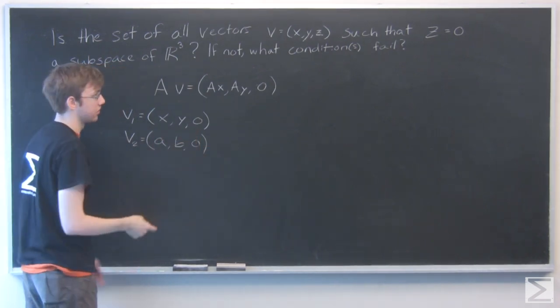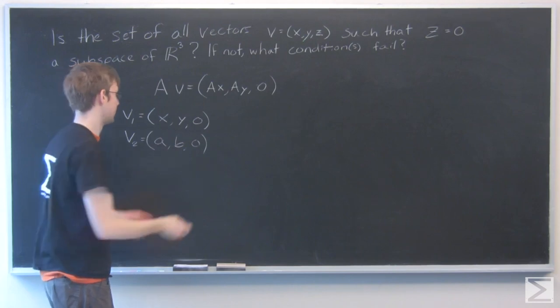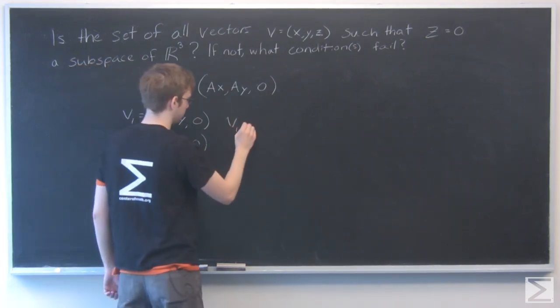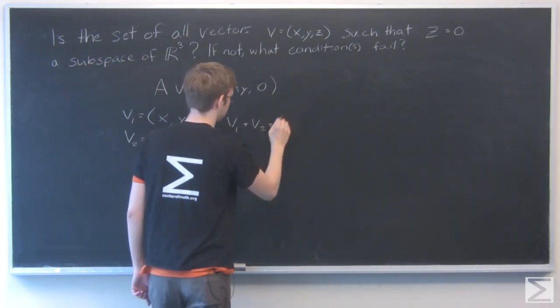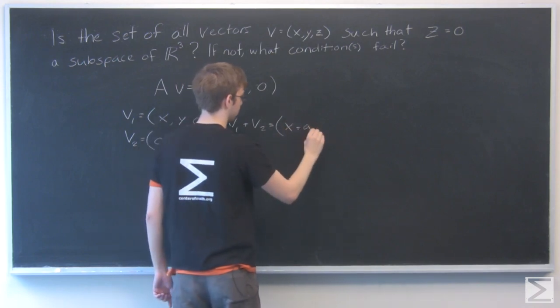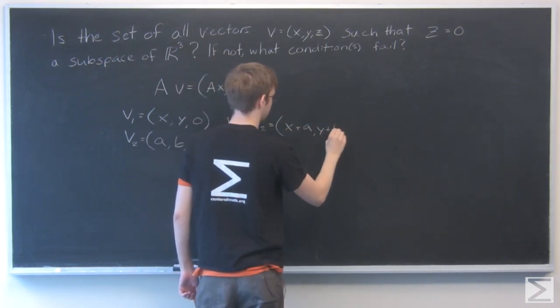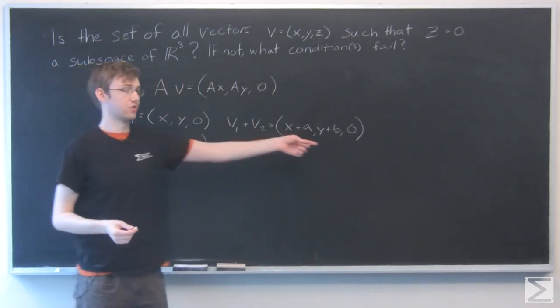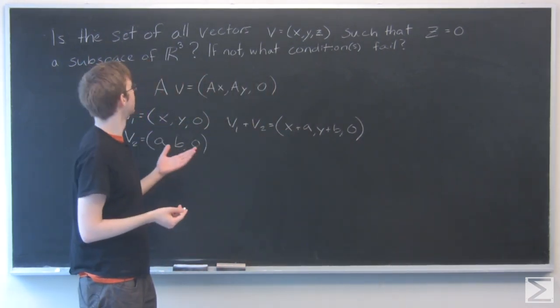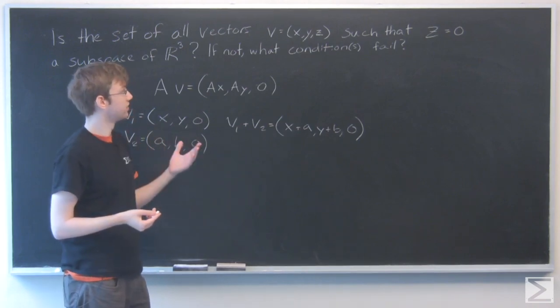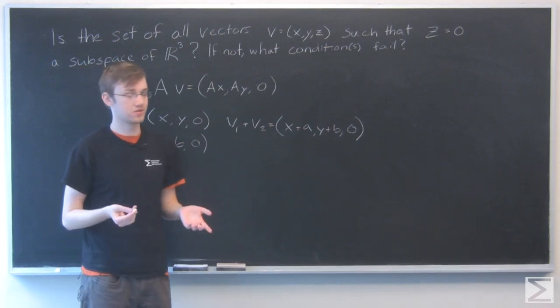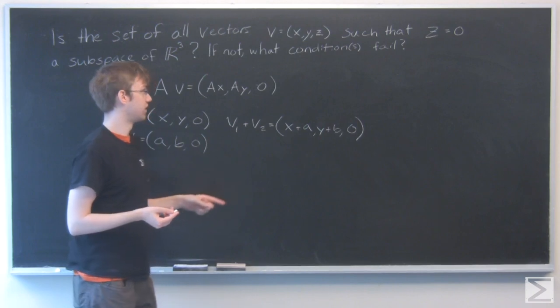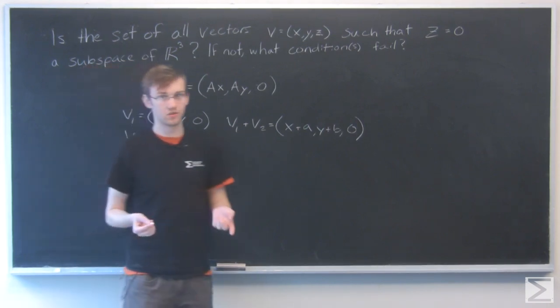Both of them have 0 for their z term. Now just adding them together, the 0 term stays 0. So we can see that this set is closed under addition, and therefore it is a subspace in R3.